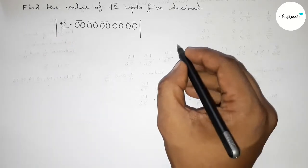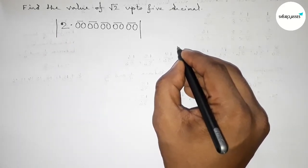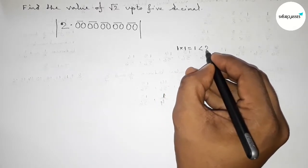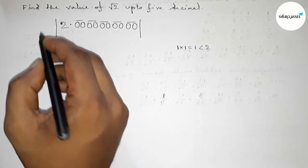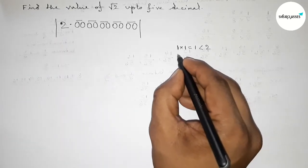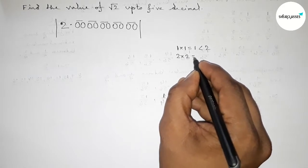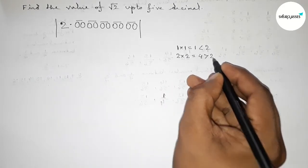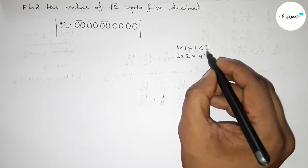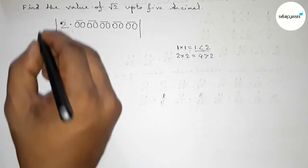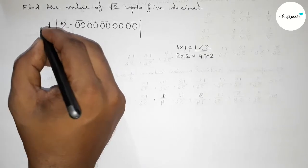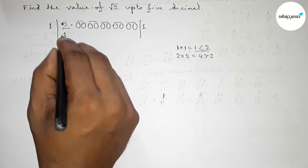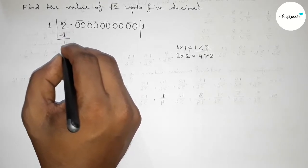Now we choose a number. If we take 1 and multiply 1×1, that gives 1, which is less than 2. If we take 2 and multiply 2×2, that gives 4, which is greater than 2. So we take 1. Write 1, and 1×1=1. Now subtract: 2−1=1.